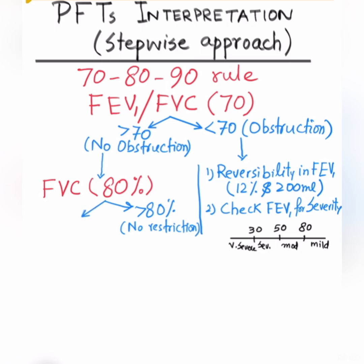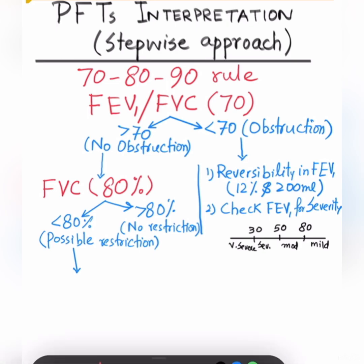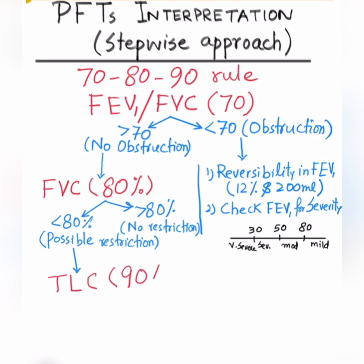However, if the patient has forced vital capacity less than 80% of predicted, then this patient has possible restriction. We cannot say for sure that this patient has restrictive lung disease definitively — we have one more step to go. That step involves checking total lung capacity, or TLC. As per our rule, the cutoff number here is 90.